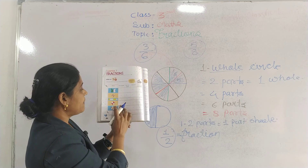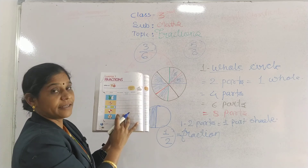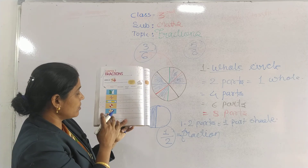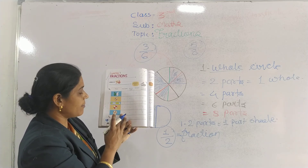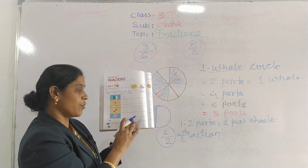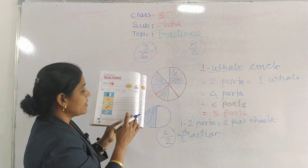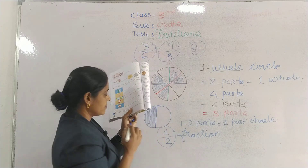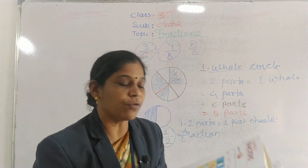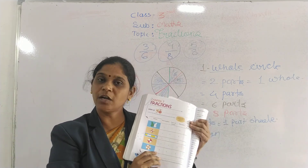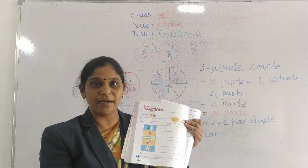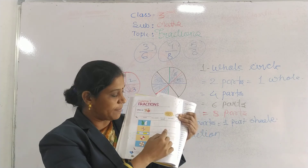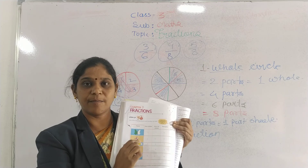Then two shaded parts, two unshaded parts, four total parts — two by four। अब यहाँ देखो — कितने shaded parts दिख रहे हैं? Four। Unshaded? Four। Total कितने हैं? Eight। तो किस तरह से write करेंगे? Four upon eight। तो सभी को Fraction समझ में आया? जो shaded part है वो ऊपर write करना है और total parts नीचे write करने हैं।